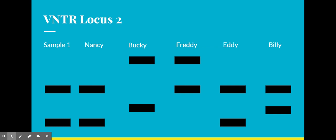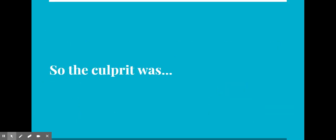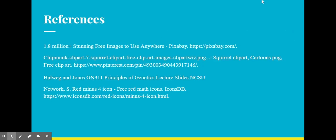We can see that the sample is consistent with the DNA, or the allele lengths, of Nancy and Eddie. And since Eddie also had DNA consistent with sample one from the first locus, then Eddie must be our suspect.